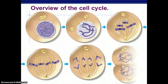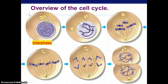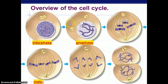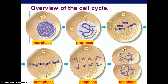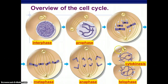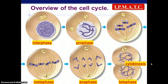A quick overview of the cell cycle: you have interphase — remember, this is the longest phase of the cell cycle — then prophase, metaphase, anaphase, and telophase. There is also prometaphase, which is an intermediate between prophase and metaphase. At the end of telophase, you have cytokinesis, where the cell actually splits. An easy way to remember this is PMAT: Prophase, Metaphase, Anaphase, Telophase.